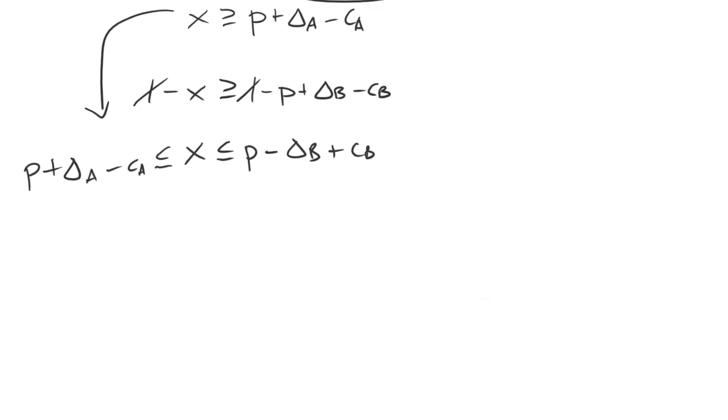To visualize this, all we're asking here is whether P plus delta A minus CA is to the left of P minus delta B plus CB. If so, then we can find any value in here to make X and both parties will be happy.